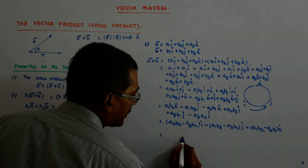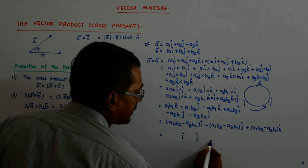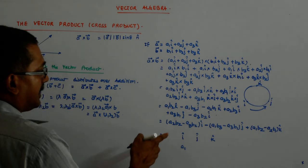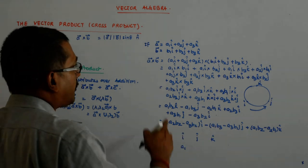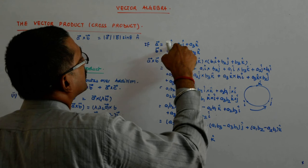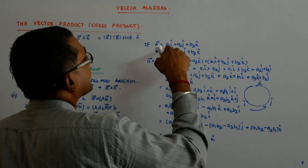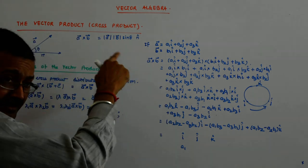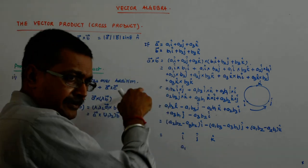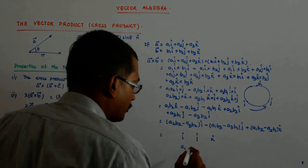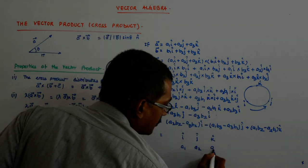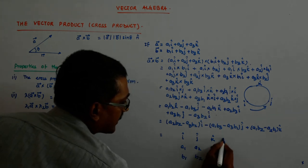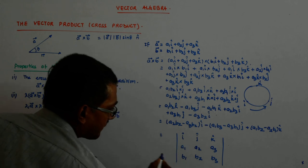Since we know the concept of determinants, we can express a cross b as a 3×3 determinant. Write i-hat, j-hat, k-hat as the first row. Below that, write the coefficients of vector a — that is a1, a2, a3 — because a is the first vector. Then comes b1, b2, b3 as the third row.